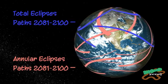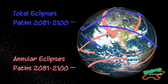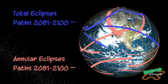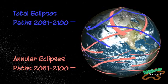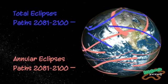When a solar eclipse occurs, it can only be viewed in small strips along the surface of the Earth.